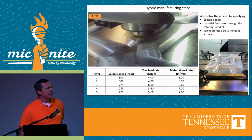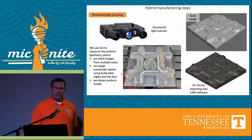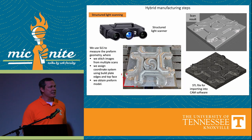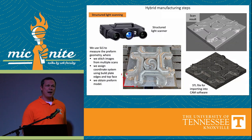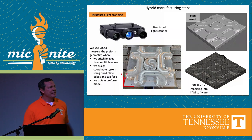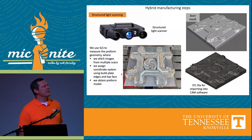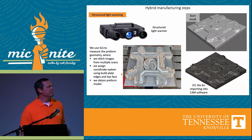The geometry that we printed is shown in the lower right. Once we've printed the geometry, we measure it to see what we've got. We use structured light scanning, as mentioned, and we end up with a digital model of what we printed that we can then use to generate our tool paths to machine that part and get the final geometry.